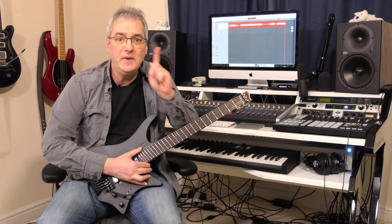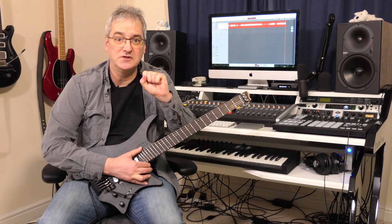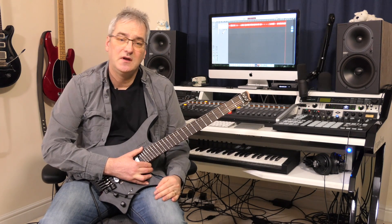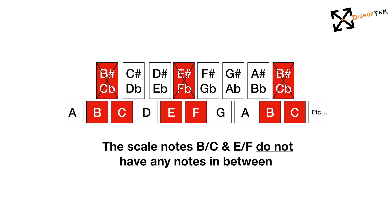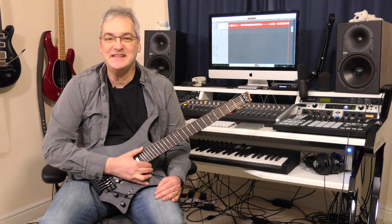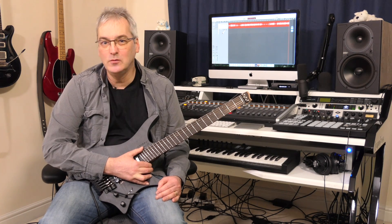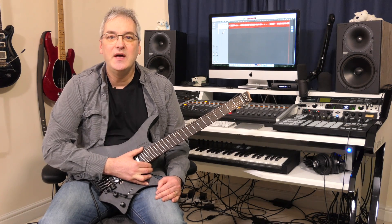At this point, you are probably screaming at the video that I have missed two out. I haven't. The scale notes B and C don't have another note in between them. Neither do E and F. The notes B-sharp or C-flat simply don't exist. The same is true with E-sharp and F-flat. Please just accept this for now until I produce another video on the history of how the musical scale was developed, and how it is all dependent on physics.